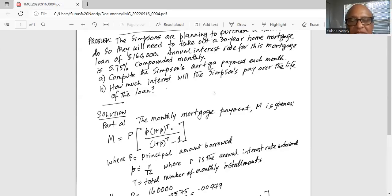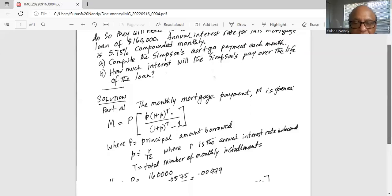P is the principal. Capital P is the principal amount borrowed, small p equals R over 12, where R is the annual interest rate in decimal. Capital T is the total number of monthly installments.